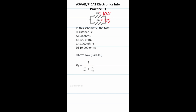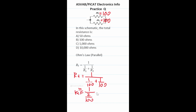Practice test question: in the schematic, the total resistance is? We have two resistors in parallel, R1 = 100Ω and R2 = 100Ω. Using the parallel resistance formula: R_total = 1 / (1/100 + 1/100) = 1 / (2/100). Keep-change-flip: 1 × (100/2) = 100/2 = 50. So this one is A, 50 ohms.